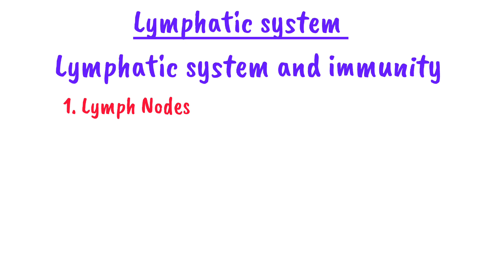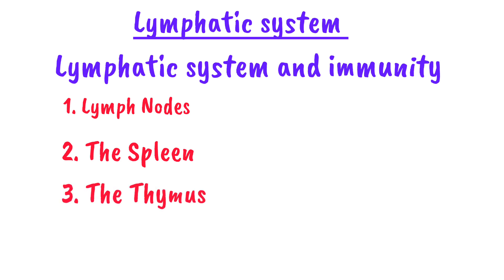Number two is the spleen — the largest lymphoid organ, located on the left side of the body near the stomach. It helps to filter blood, stores platelets and produces antibodies to fight infections. Number three is the thymus — a small organ in the upper chest behind the breastbone. It is important in childhood because it helps in the development of T cells which help in fighting infections. As we age, the thymus shrinks and becomes less active.